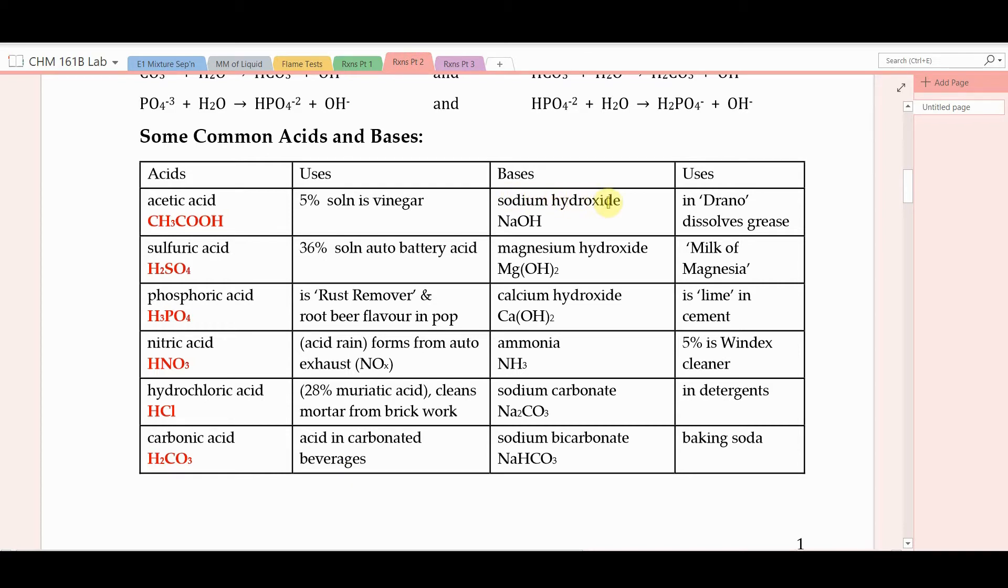Hydrochloric acid. You can purchase it as a 28% solution called muriatic acid at the hardware store. It's used to clean mortar from brickwork. And finally, carbonic acid is the familiar acid in carbonated beverages. Some bases include sodium hydroxide. That's the active ingredient in drano, which degreases. Bases dissolve grease. Magnesium hydroxide is a weaker base. It's commonly sold as milk of magnesia used for neutralizing acid indigestion. Calcium hydroxide, commonly called lime, is a binding agent in cement. And ammonia, NH3, is a base. So these hydrogens are in no way acidic, which is typically why they're not written on the left. We don't want to confuse them as being acidic. The nitrogen itself is somewhat basic. A 5% solution of ammonia is known as Windex, and it's a degreaser. Sodium carbonate. Another base. A detergent builder, used in many detergent formulations. And sodium bicarbonate, a weaker base, known as baking soda.